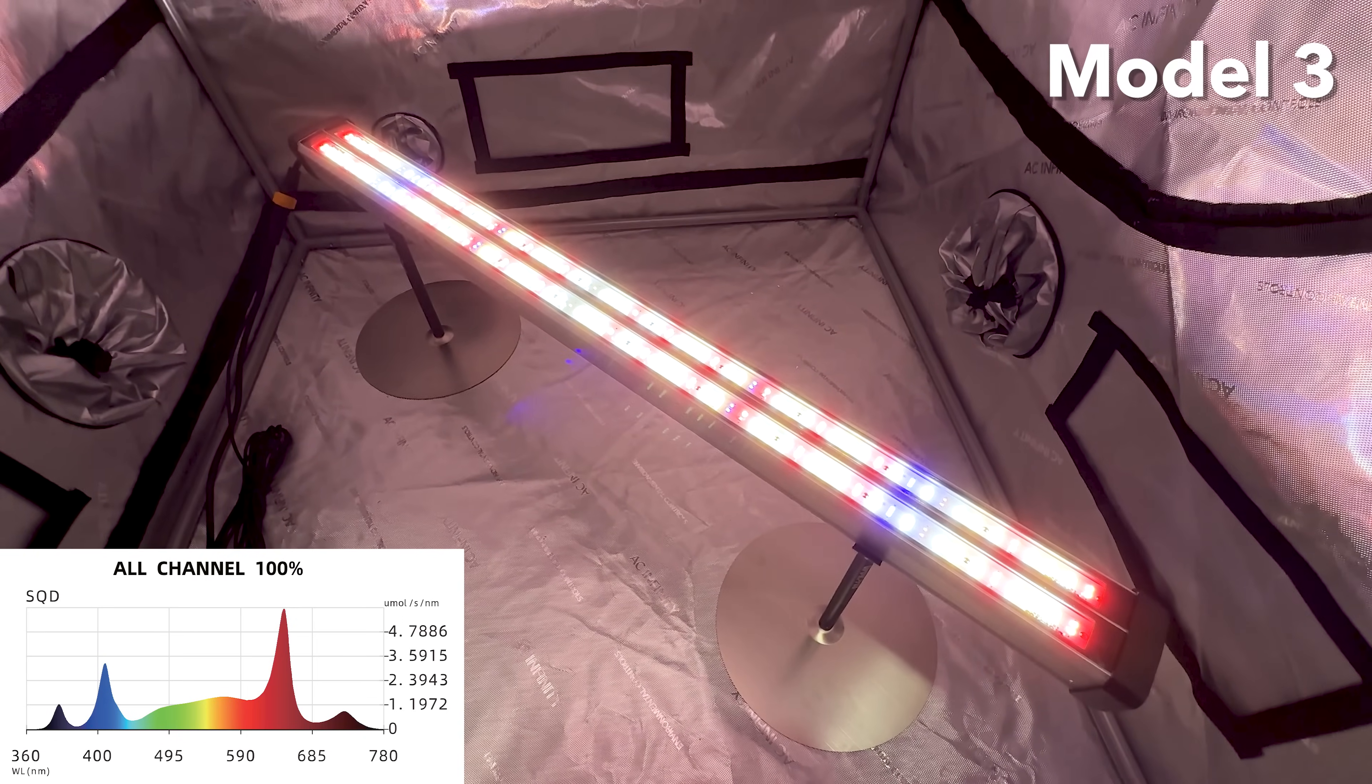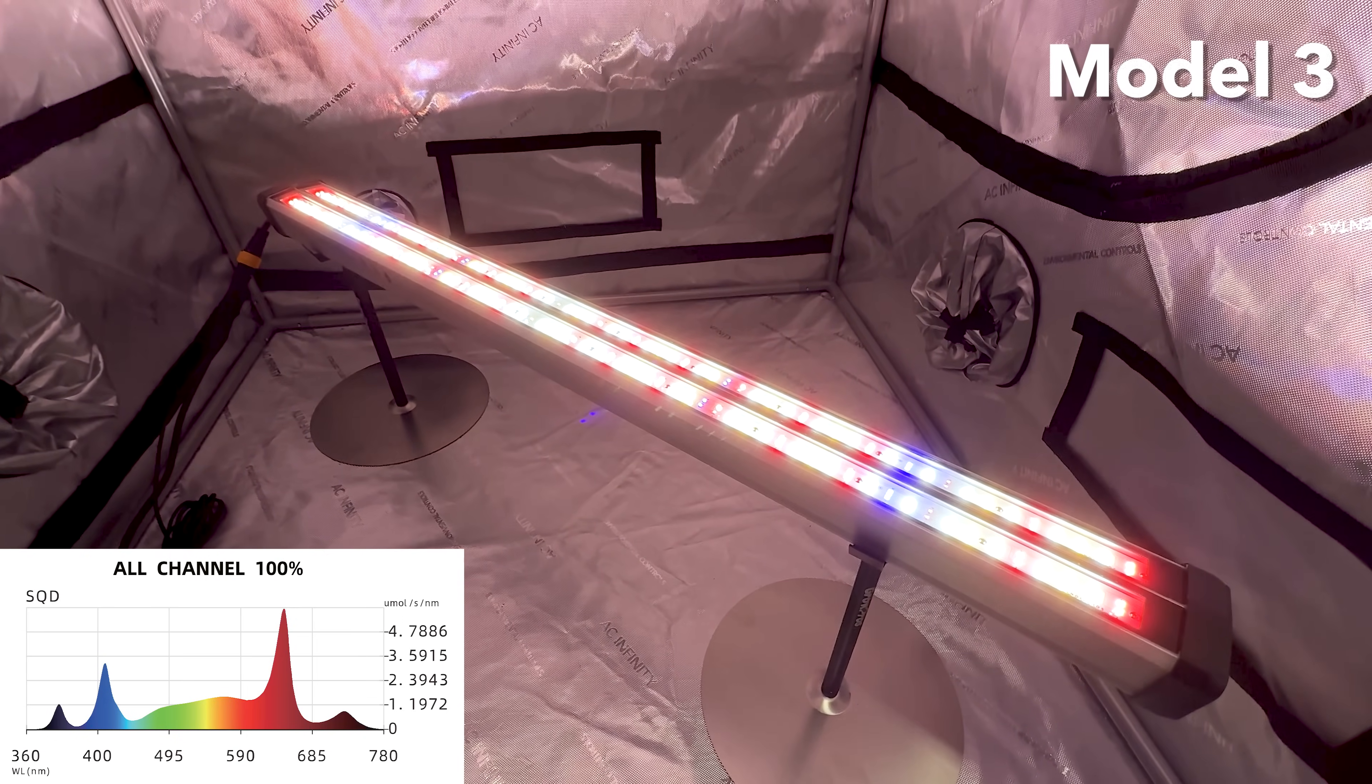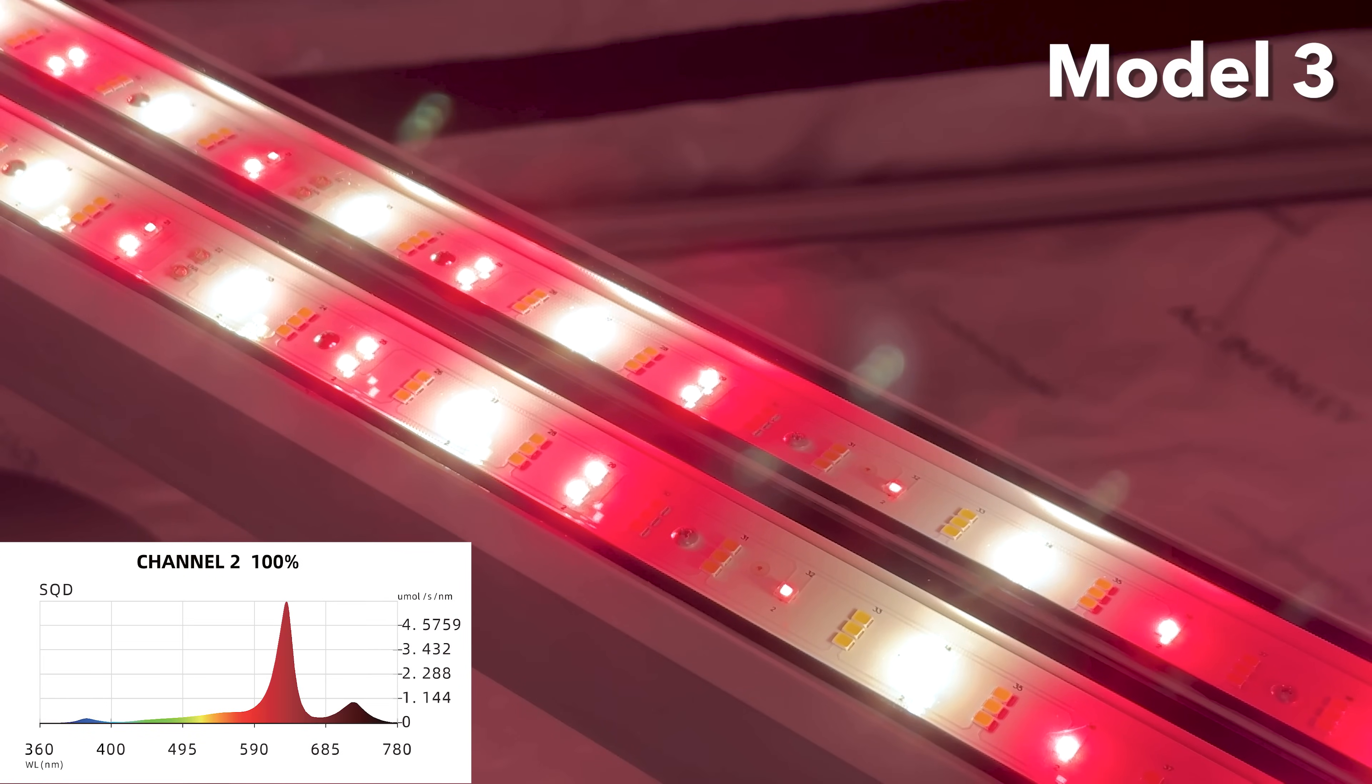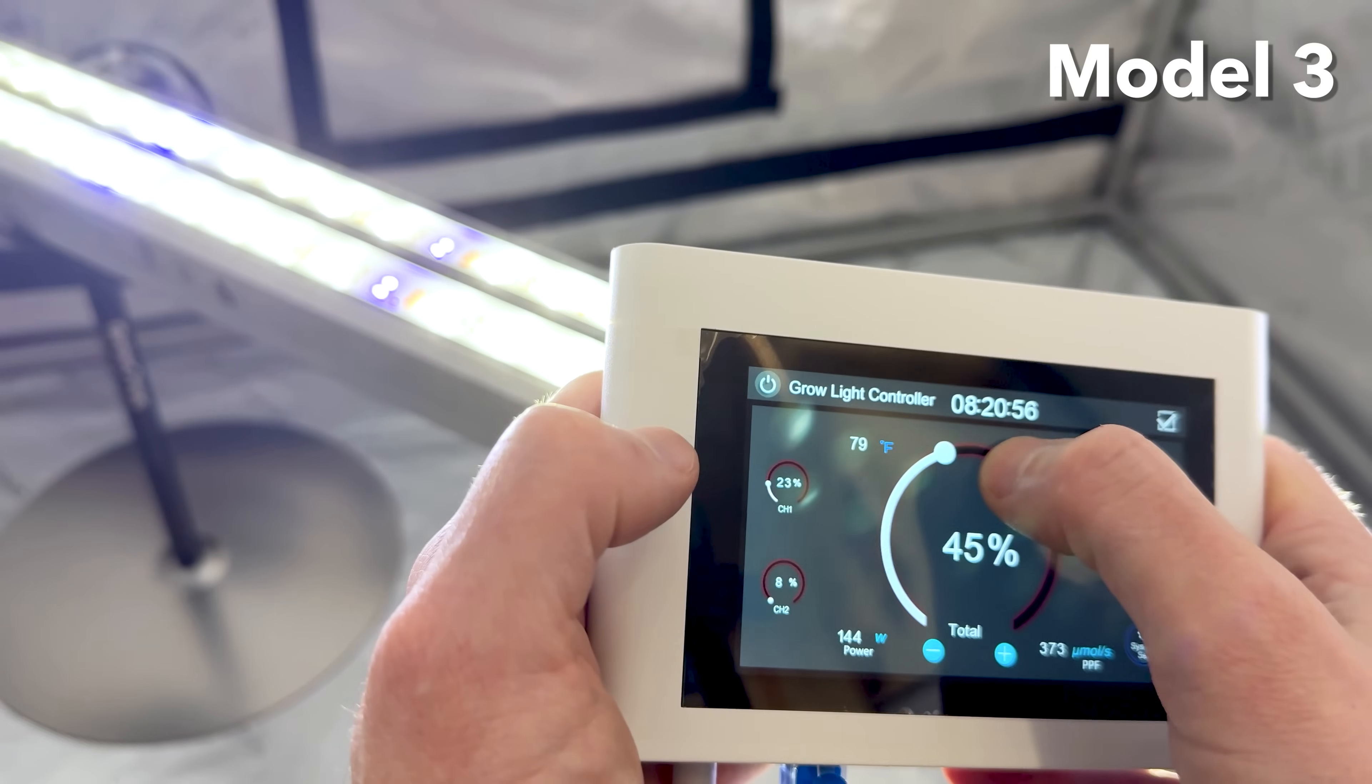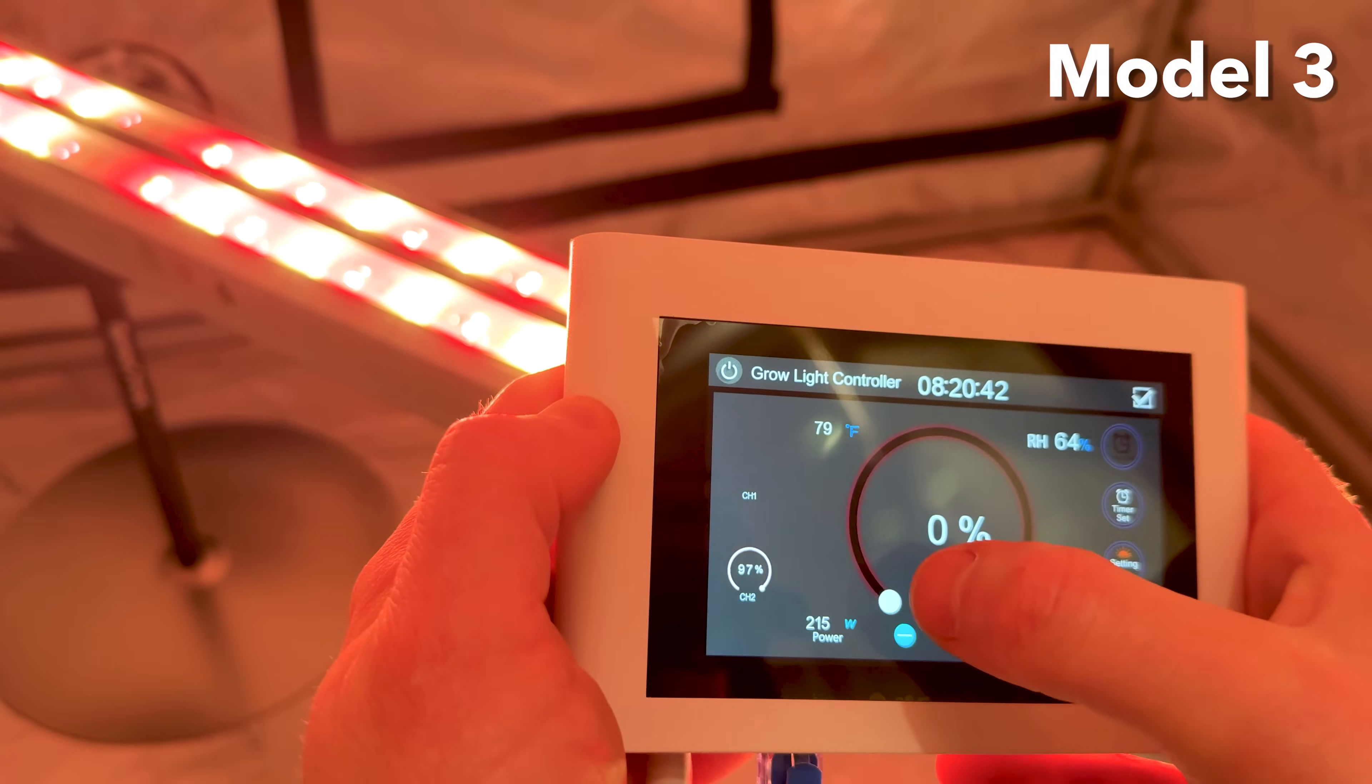The Model 3 features a sleek, slim design with dual channels. Each channel operates at 75 watts, one providing a blue, white, UVA spectrum for vegetative stages, and the other offering a red, IR, and white spectrum for flowering stages. The blue, white, UVA channel enhances photosynthesis and promotes strong vegetative growth, while the red and IR channel boosts flowering density, color, and bud structure.